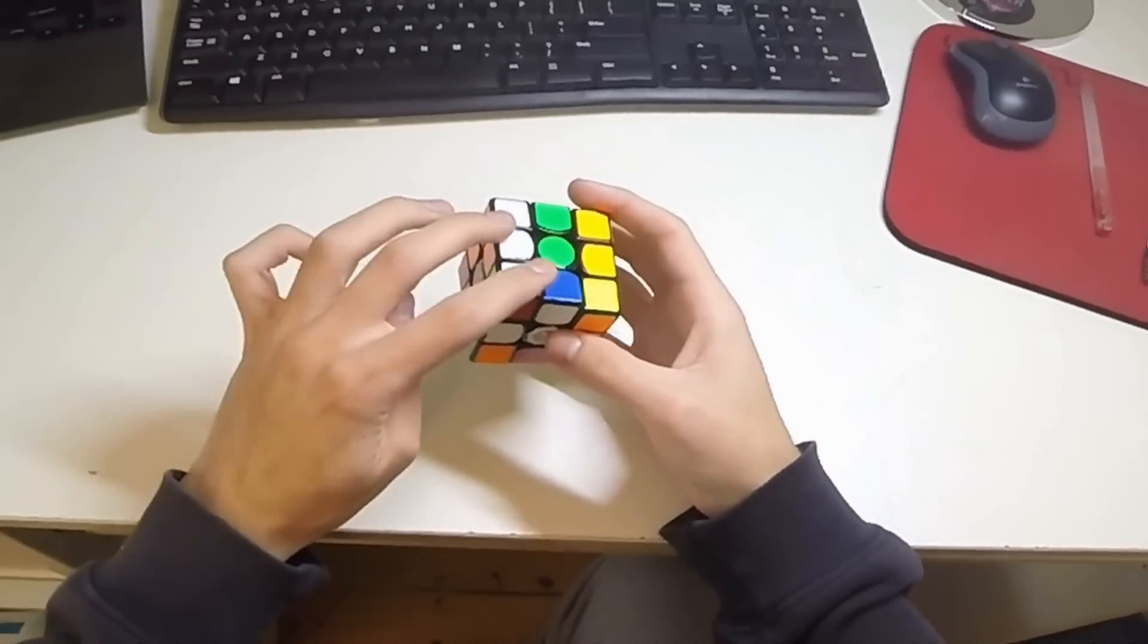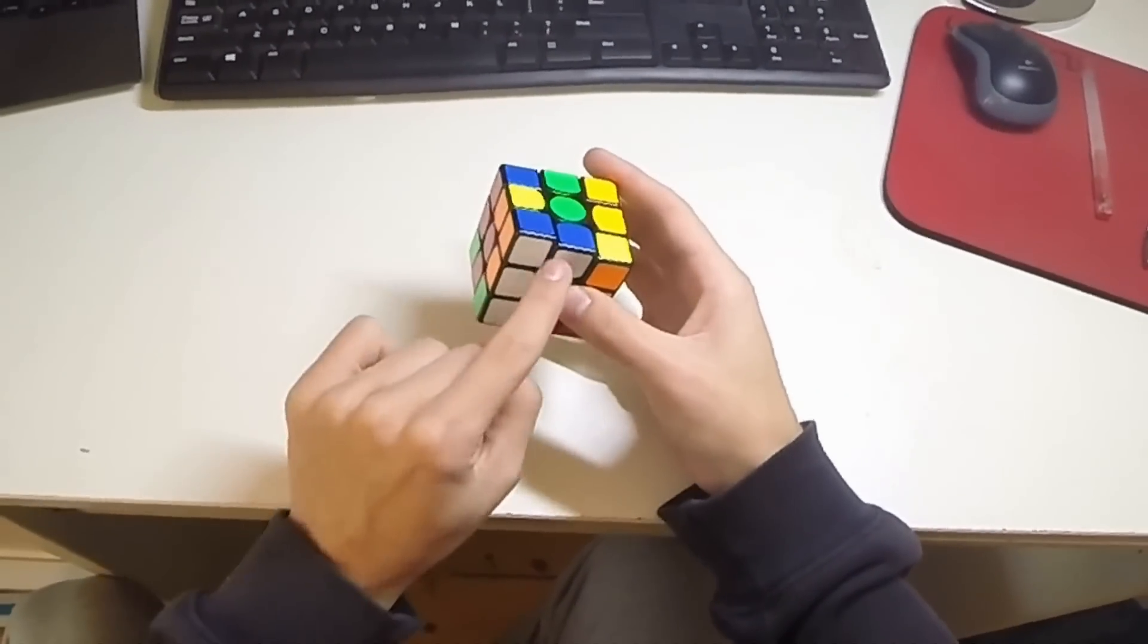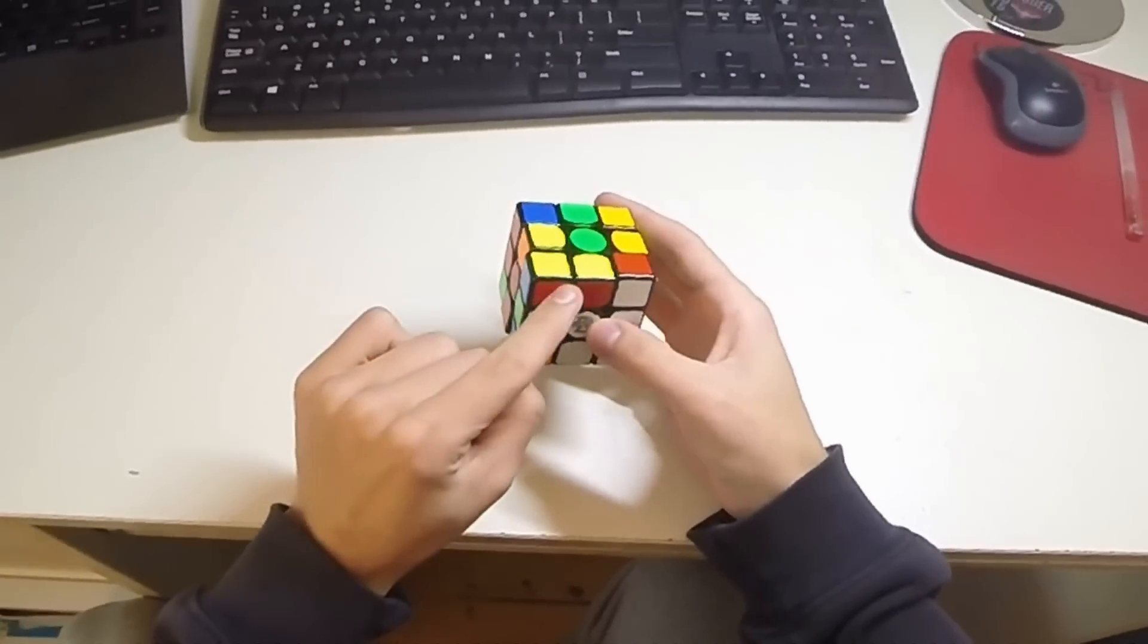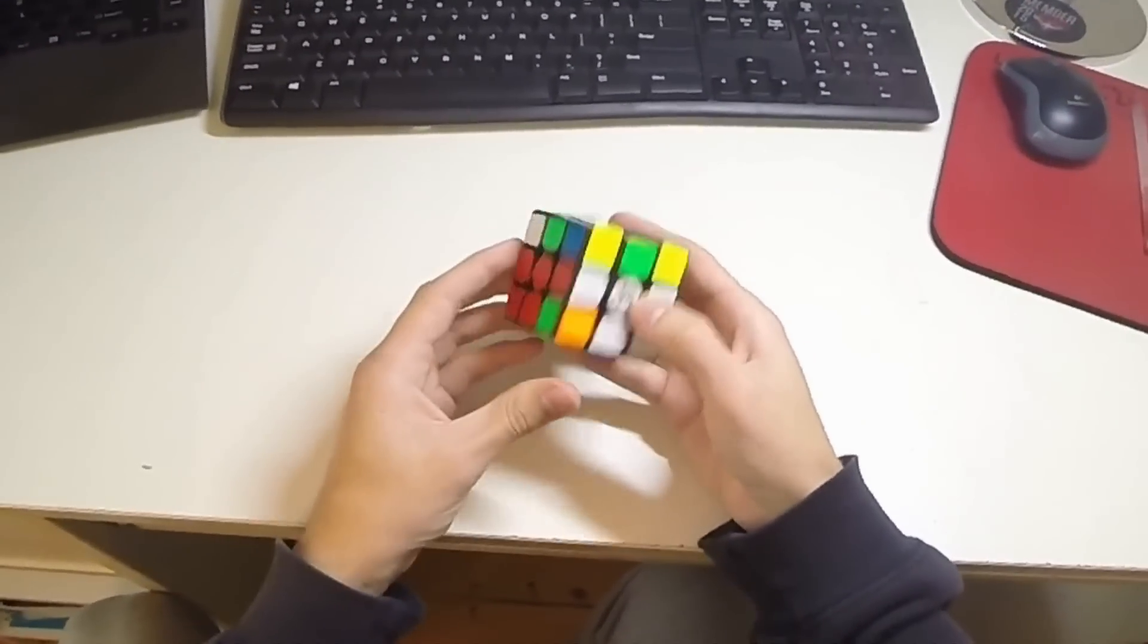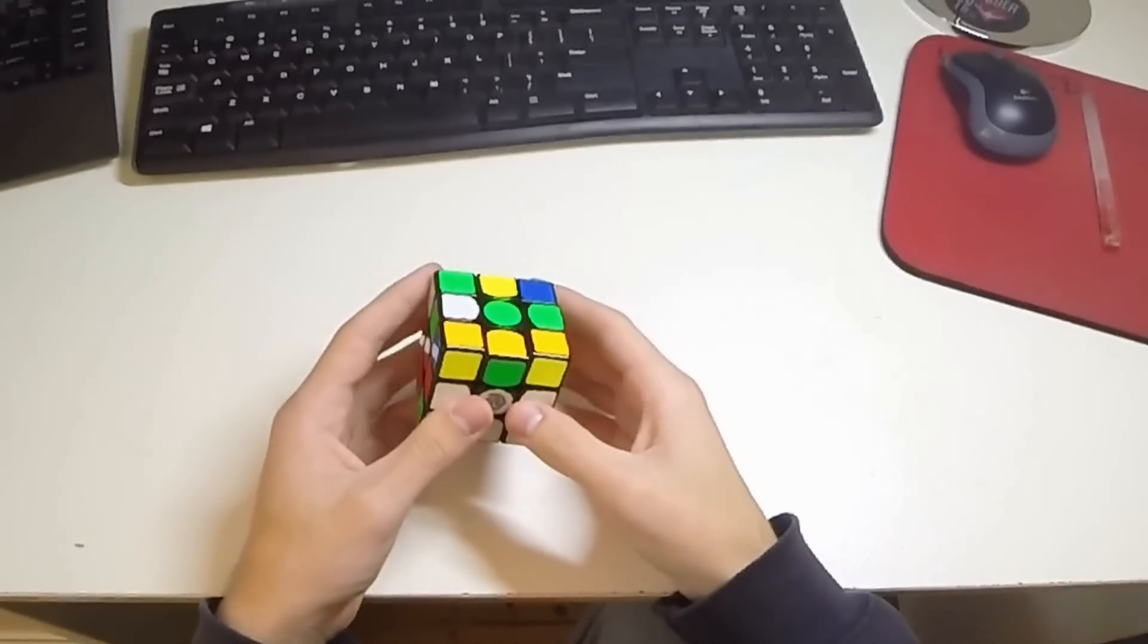And then do L which pairs this block up, F2 which puts it in, and then U which moves that across, and then L'. So that was the double X cross which I quite liked.